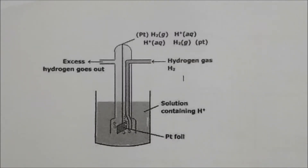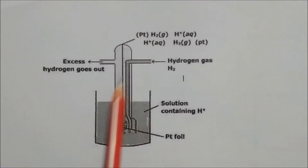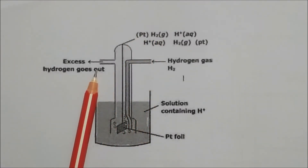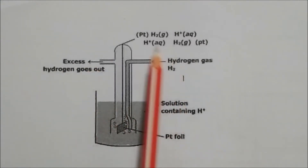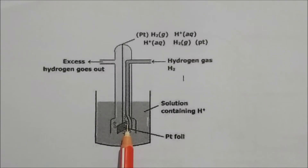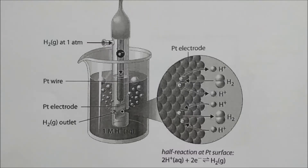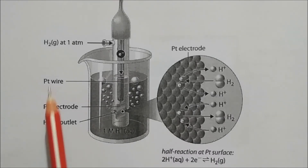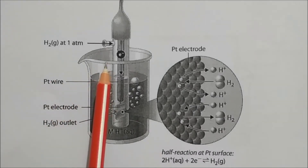Looking at the diagram of the hydrogen electrode: the platinum electrode goes inside, excess hydrogen goes out from the top. Hydrogen gas is passed to maintain the required atmospheric pressure. The solution is shown with the platinum electrode inside. Real pictures show hydrogen gas bubbling through the platinum surface, with bubbles visible and a small platinum area where the hydrogen gas outlet is located.